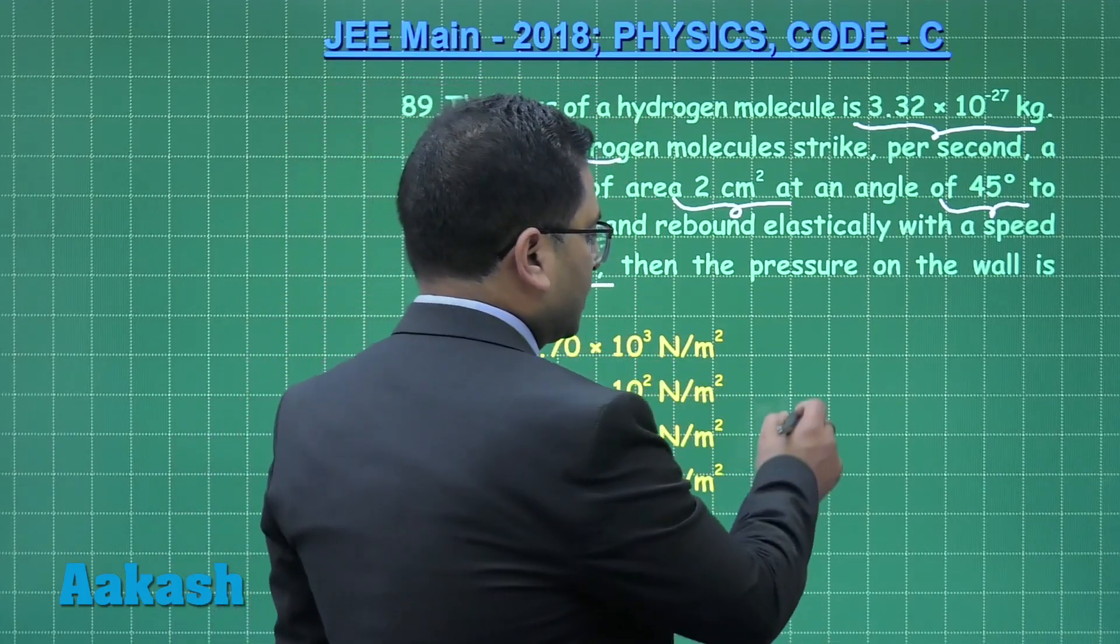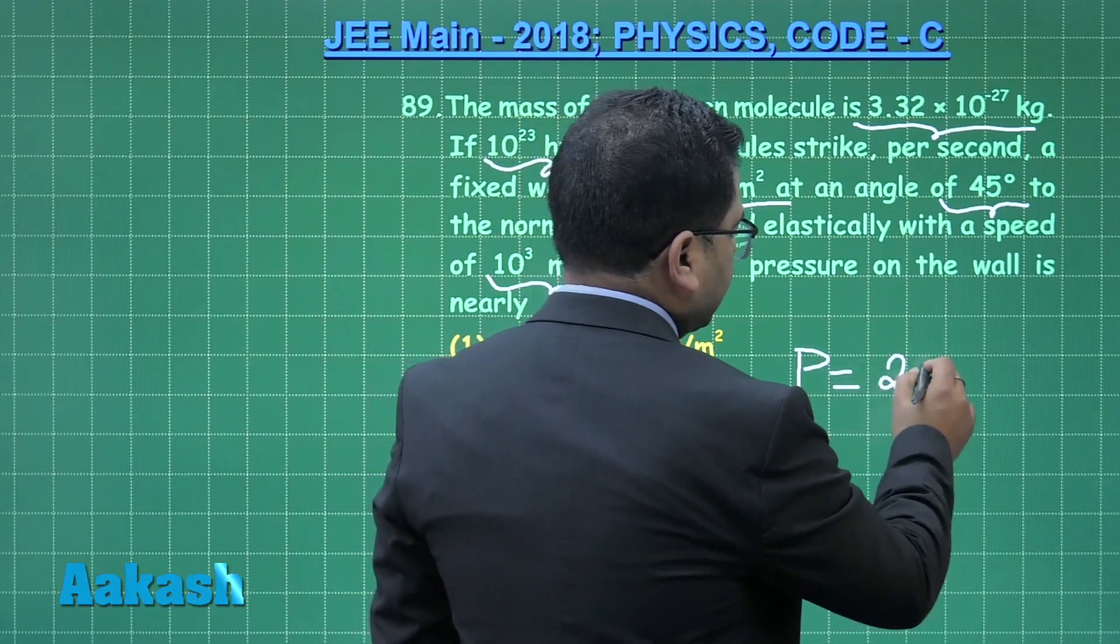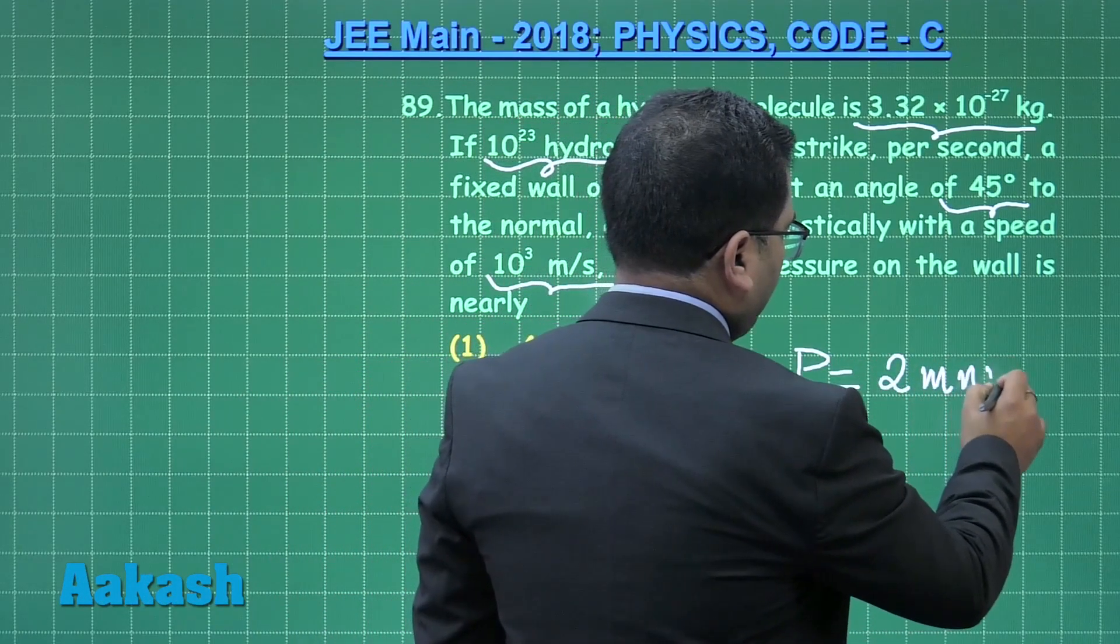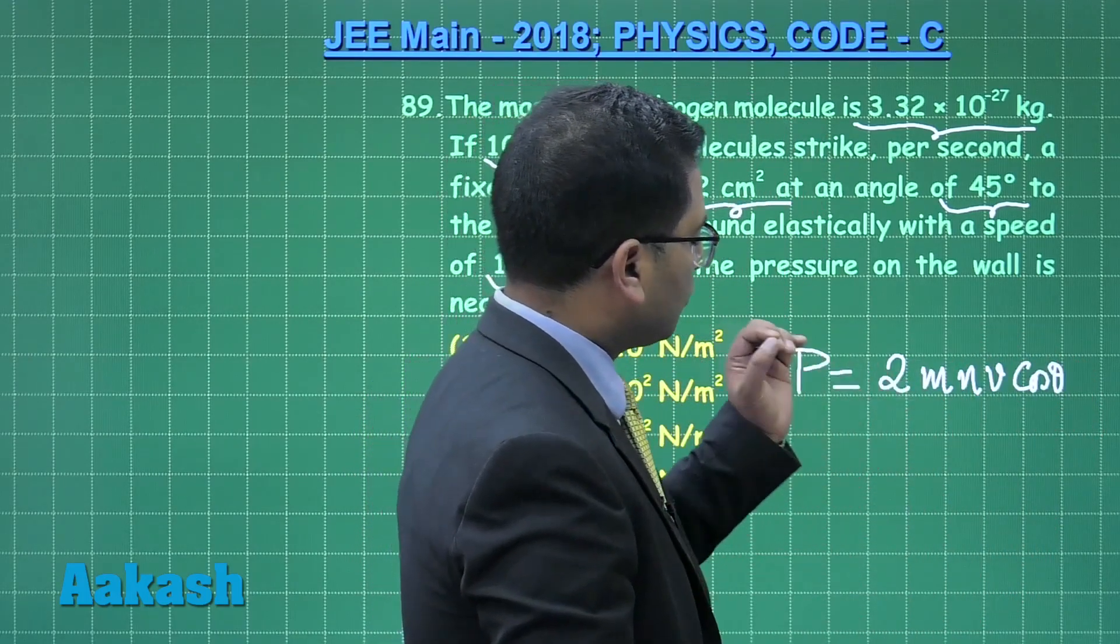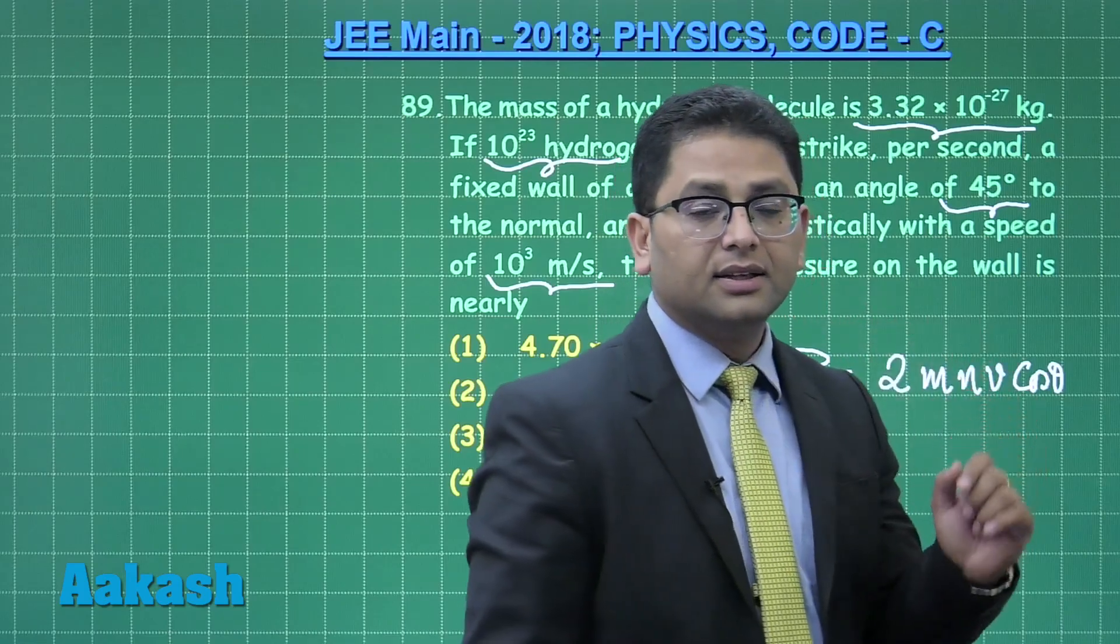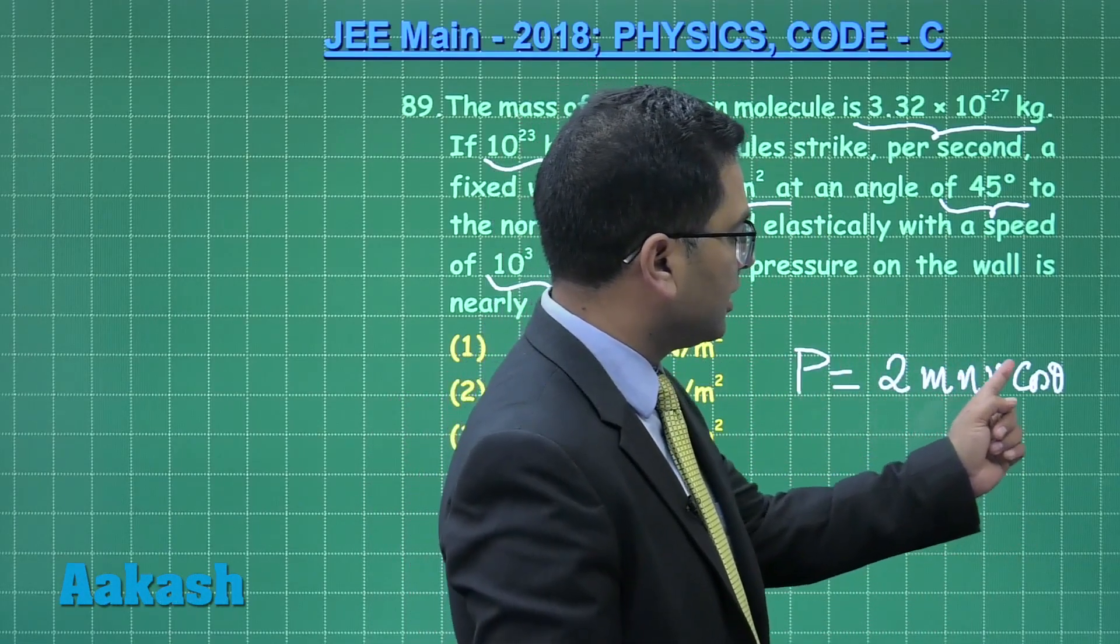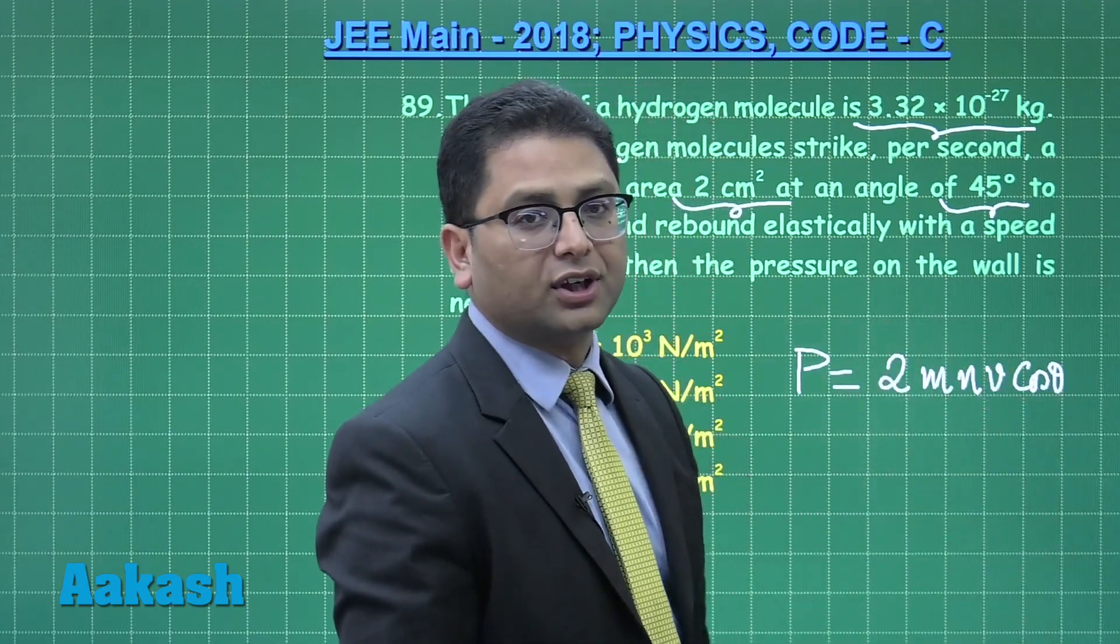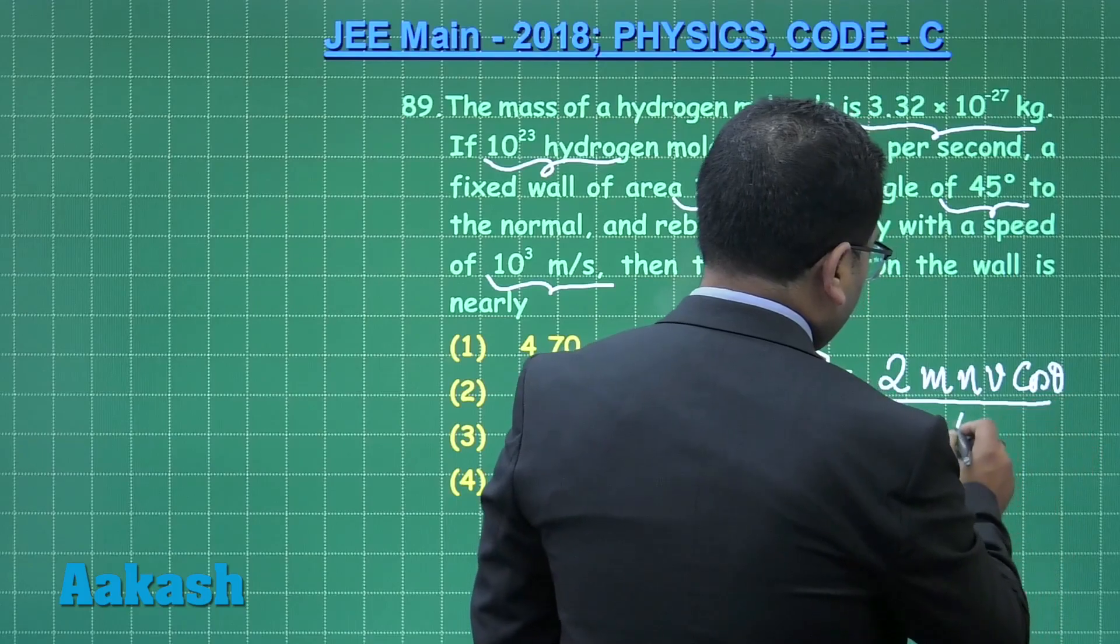And the speed of impact is also been there. We need to calculate the pressure on the wall. Well, the pressure would be force per unit area and the force in this case would be straightforward: 2m·n·v·cos(θ), where m is the mass of one molecule, small n is the number of molecules striking per unit time, v being the speed, cos(θ) where theta is 45 degrees, and divided by area would be the pressure.